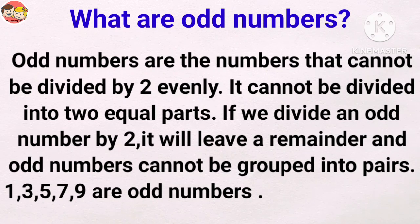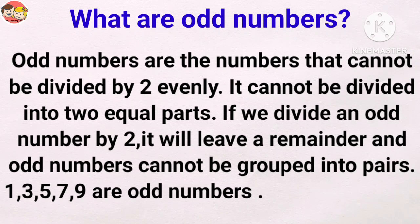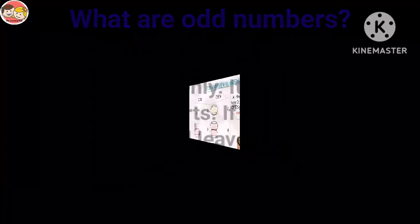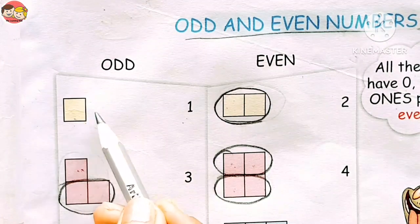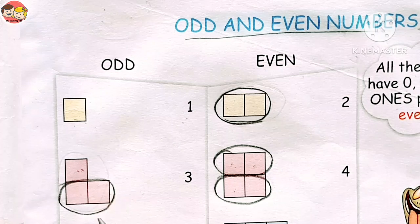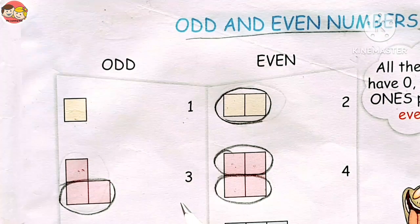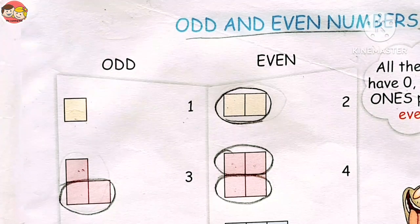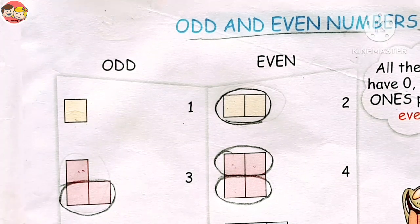If we divide an odd number by two, it will leave a remainder, and odd numbers cannot be grouped into pairs. For example, one, three, five, seven, nine are odd numbers. Look: there is one box — it has no partner. There are three boxes: one pair is there, but one box has no partner. So we can't put number one and three into a pair, because pair means a set of two things — and number one and three cannot be divided into two equal parts.